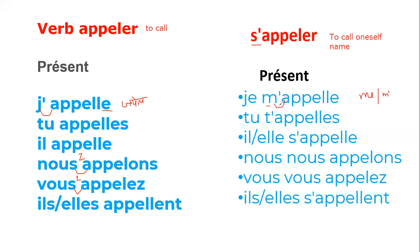We use 'je m'appelle' when we say our name — like 'my name is', literally 'I call myself'. The next form is 'tu t'appelles' — meaning 'you call yourself', or 'your name is'. The 'te' becomes 't apostrophe' before a vowel. Then 'il s'appelle' and 'elle s'appelle' — meaning his name is or her name is; he calls himself, she calls herself. For 'il' or 'elle', we put 'se'.